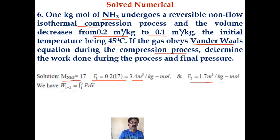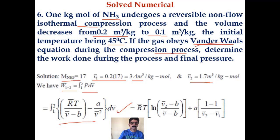Here P is nothing but the pressure expression from the Van der Waals equation of state, that is R bar T divided by V bar minus b minus a by V bar squared. This has to be integrated with respect to dV bar from 1 to 2. You will get it as R bar T times the natural logarithm of V2 bar minus b divided by V1 bar minus b plus a times 1 by V2 bar minus 1 by V1 bar.